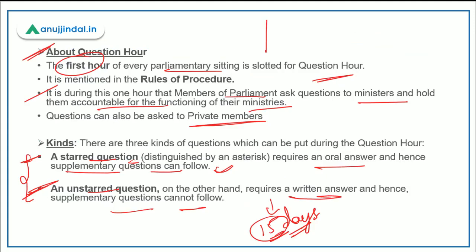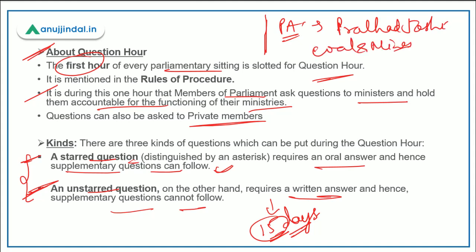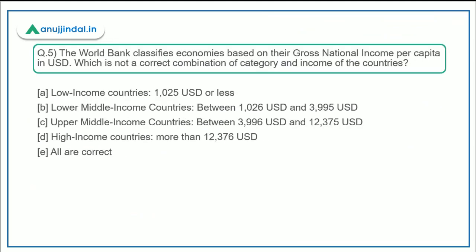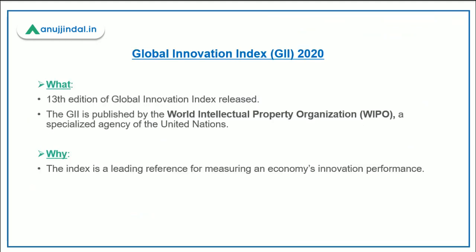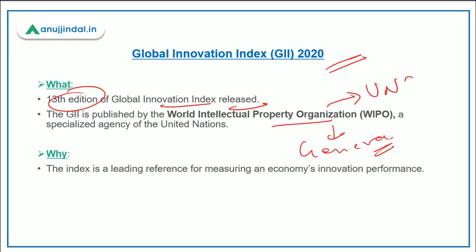The Parliamentary Affairs Minister is Mr. Pralhad Joshi, who is also the Minister for Coal and Mines, with his Lok Sabha constituency in Dharwad, Karnataka. Now let's move to questions three, four, and five about the Global Innovation Index. Recently the 13th edition of the Global Innovation Index was released by the World Intellectual Property Organization (WIPO), headquartered in Geneva, whose parent organization is the United Nations ECOSOC.